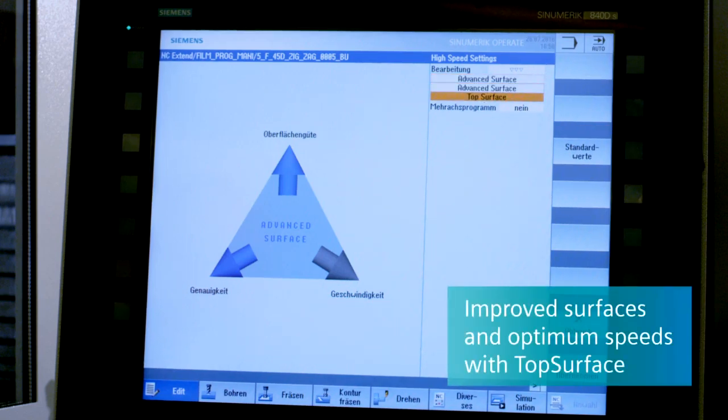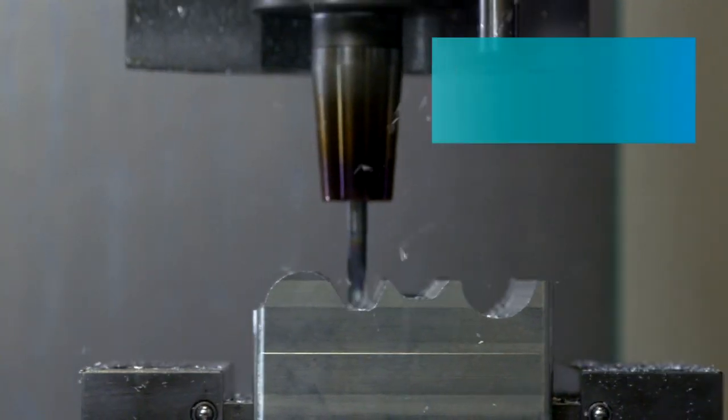With Top Surface, Siemens optimizes the milling paths, which leads to even better surfaces with optimum machining speeds.